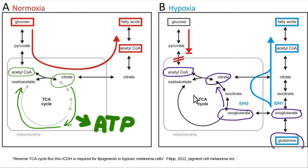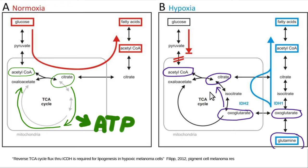Cancer is all about biosynthesis because cancer behaves like an anaerobic bacteria — it just wants to replicate as fast as it can. To replicate, it has to double all its contents: 3.3 billion base pairs of DNA, plasma membranes, organelle membranes, all enzyme proteins. A normal cell, like a kidney filtering blood or a liver running metabolism, needs lots of ATP to do its job. But the cancer cell just wants to grow and replicate — it's like a primitive bacteria.